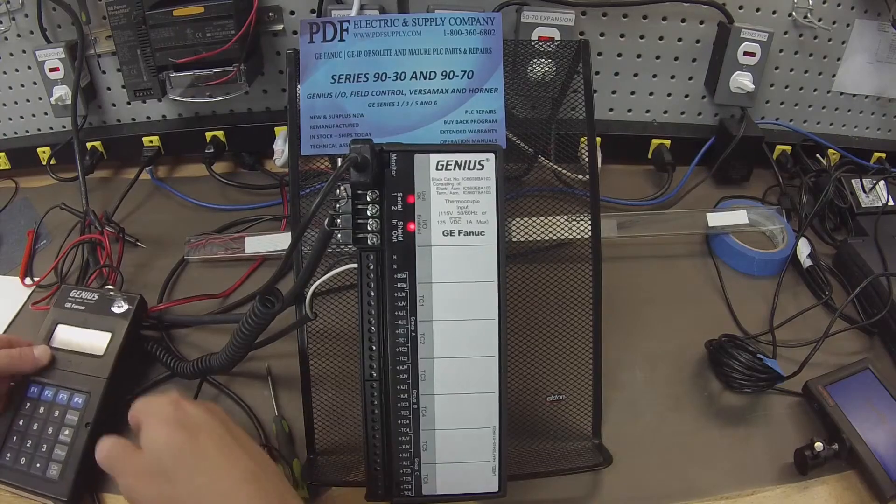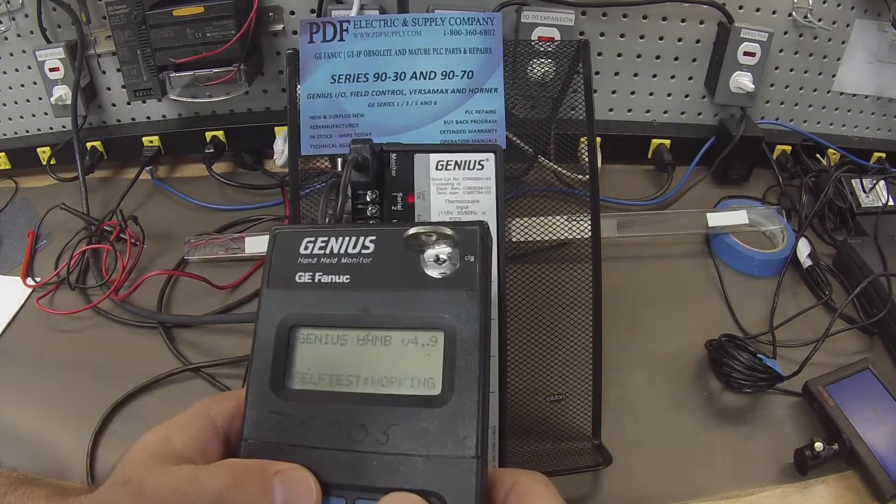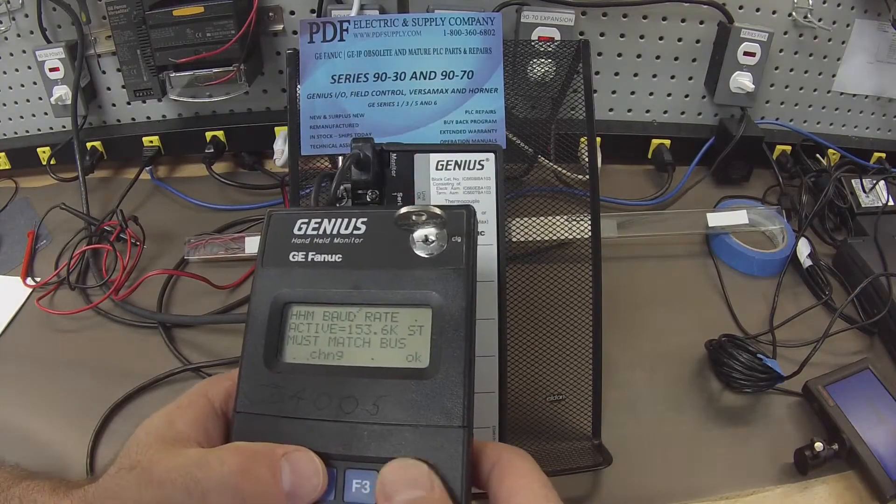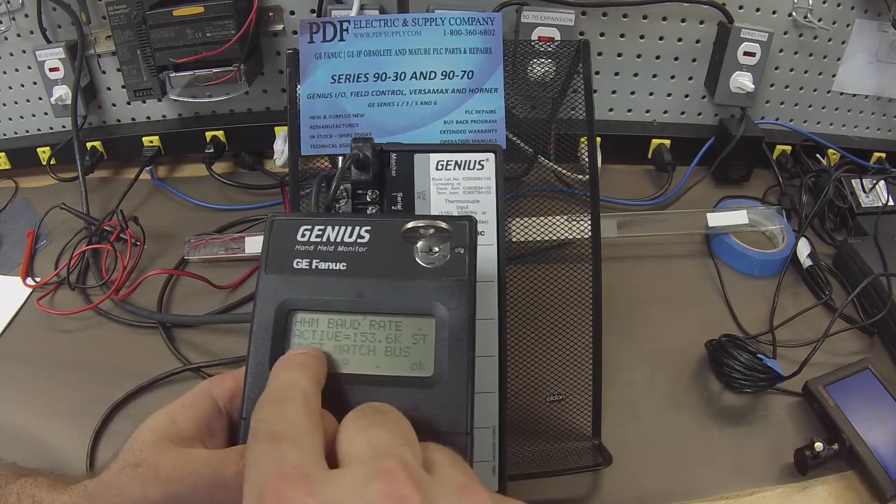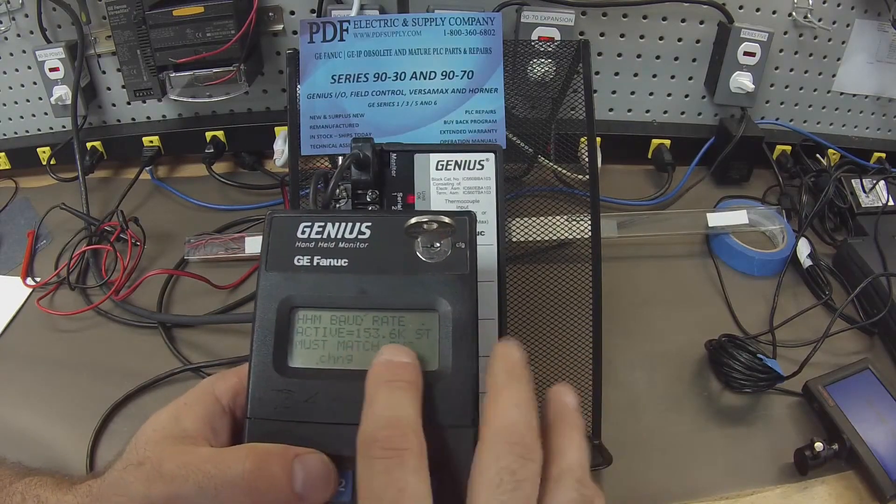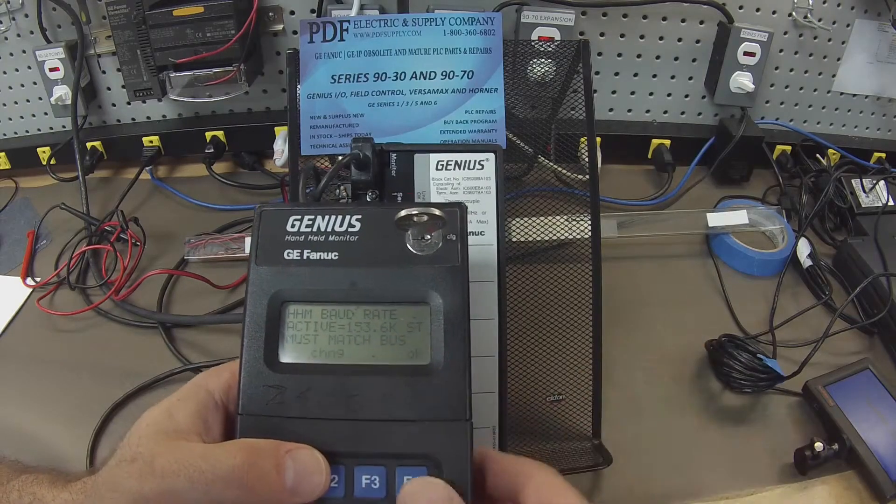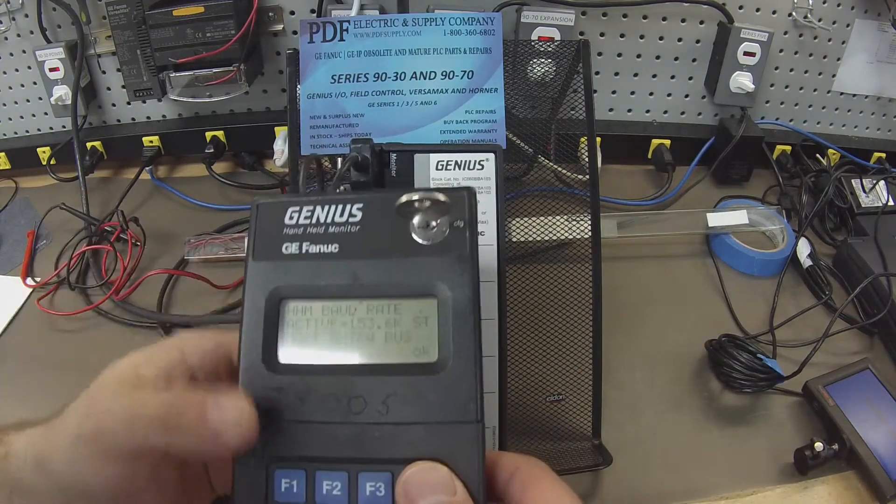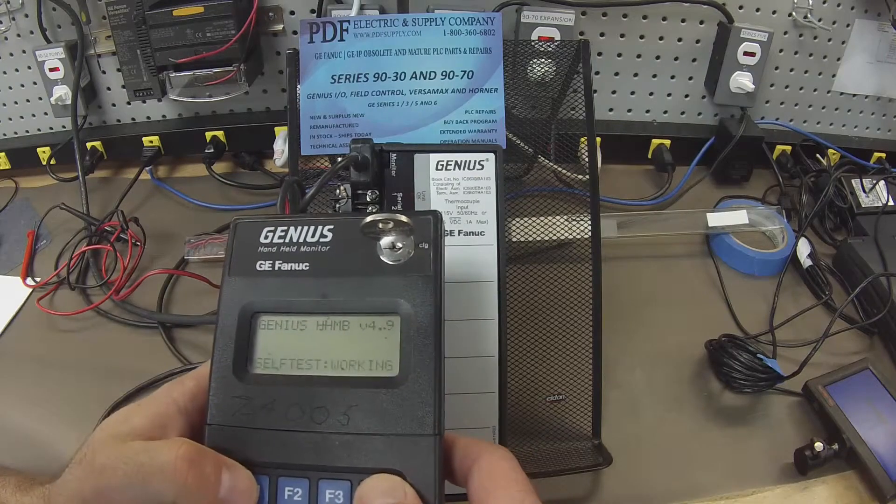So I'm going to show you how I configured this block. Power up the handheld monitor—I normally keep all the blocks and my test equipment at 153.6K baud standard. You may have a different application, which is fine. So I check that that matches what I've got.